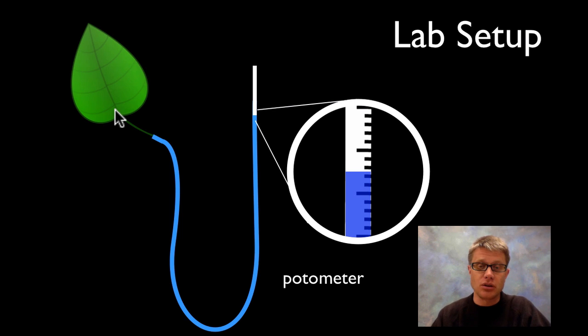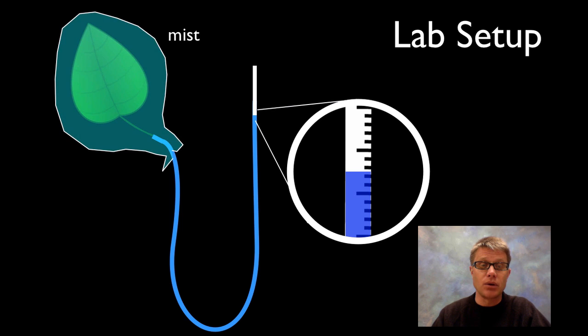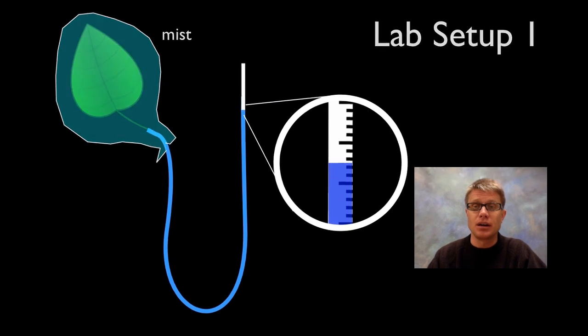Let me show you what we have. This would be our standard lab setup, basically setup in your lab ready to go. We then compare that over time to the following. We have another one where we put that leaf inside a bag and then we put mist inside the bag.